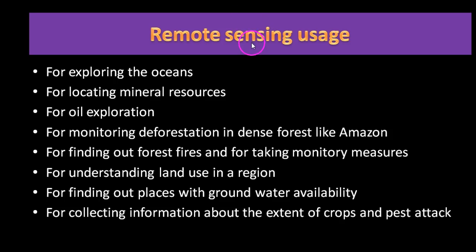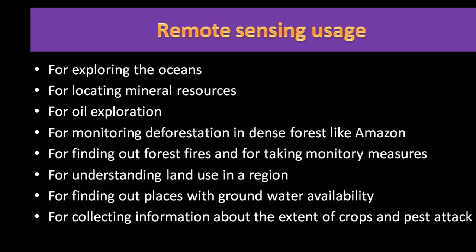Remote Sensing is used for exploring the oceans, locating mineral resources, oil exploration, monitoring deforestation in dense forests like the Amazon, finding forest fires and taking preventive measures, understanding land use in a region, finding places with groundwater availability, and collecting information about the extent of crops and pest attacks.